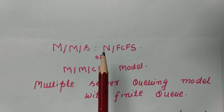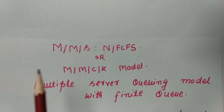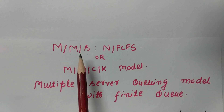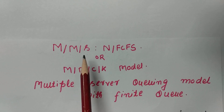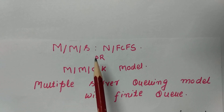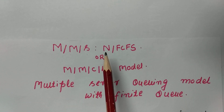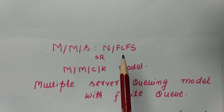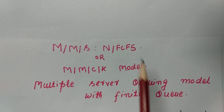The first M stands for Poisson Arrival or Exponential Interarrival Time; the second M stands for Poisson Departure or Exponential Service Time; the third M stands for Multiple Servers; and N stands for Finite or Limited Queue, meaning we can accommodate only a finite number of customers in the system. Customers are served on a first come, first served basis.